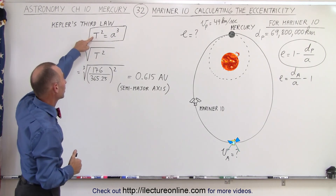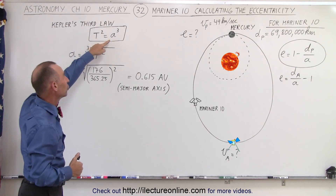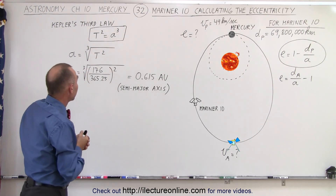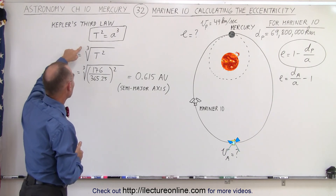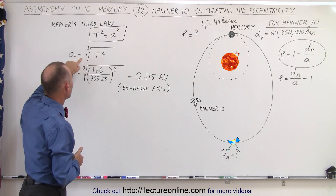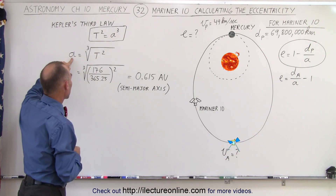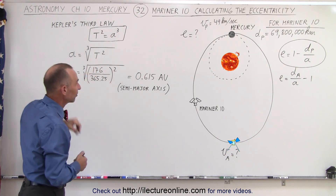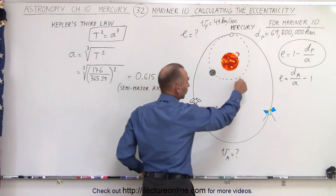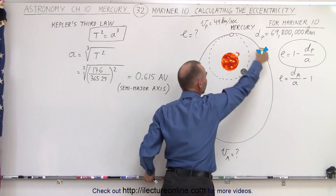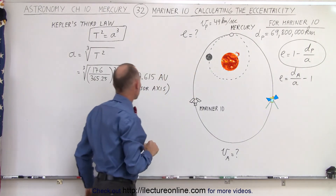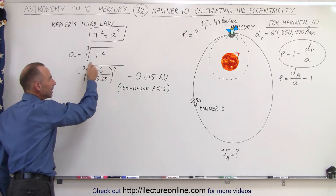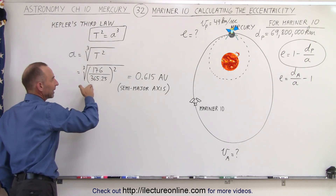Kepler's third law states that the period squared in years is equal to the distance of the semi-major axis cubed. We can solve for the semi-major axis, which is equal to the cube root of the period squared — in astronomical units when the period is in years. So we have to convert 1076 days, which is two Mercury years — the time it takes for Mariner 10 to go all the way around and meet up with Mercury again — by dividing by the number of days in a year to get the period in years.